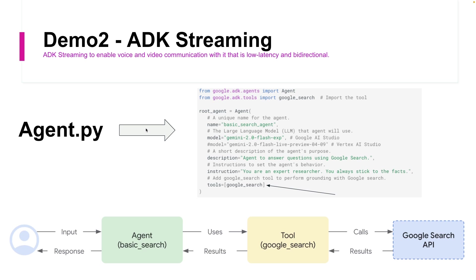Before I run this demo, let's understand what ADK Streaming is. ADK Streaming enables voice and video communication with your agent. You can use not just text but also audio and video to communicate with the agent. We'll create a simple agent using ADK Streaming to enable audio and video communication with low latency, and it will be bidirectional — you'll feel like you're talking to a human who is answering your questions.